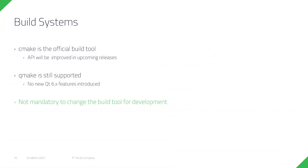You may already know there have been changes in the build system. CMake is now the official build tool, and its API is improving constantly — new features will be added whenever required by Qt itself. However, qmake is still supported, so you can migrate to Qt6 without changing your build system. The restriction is that no new features will come to qmake. From a build system perspective, the migration should be pretty easy.